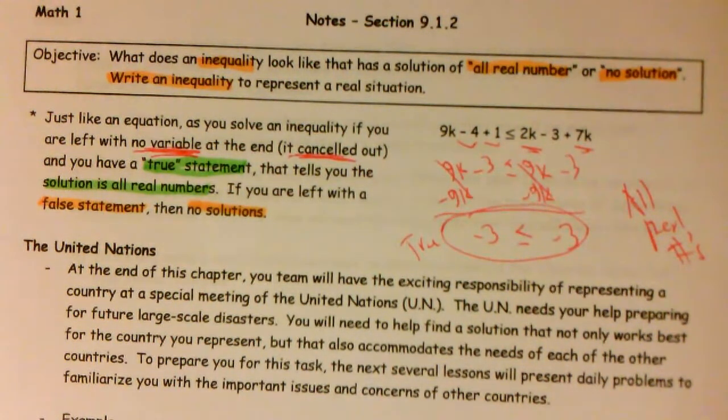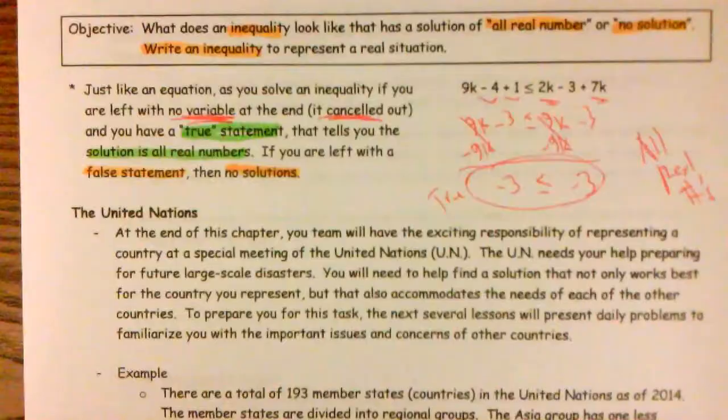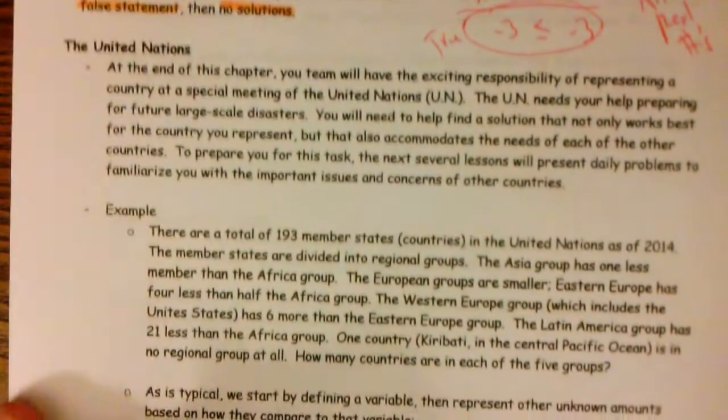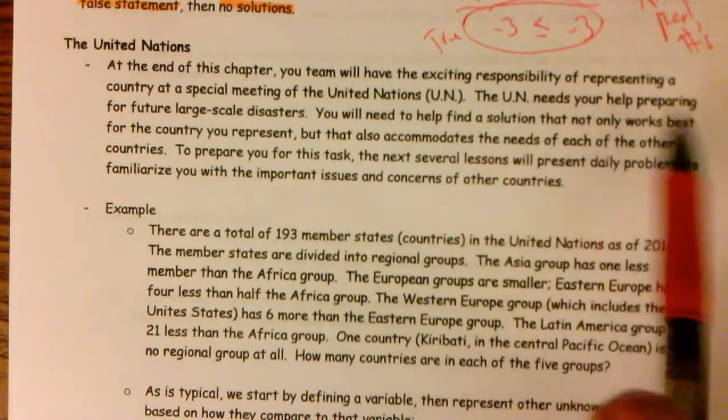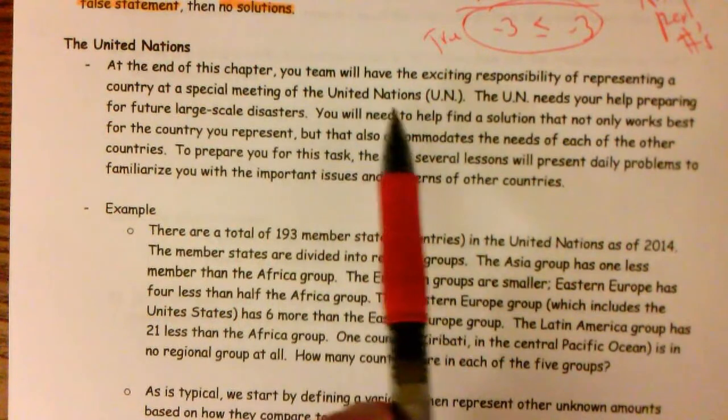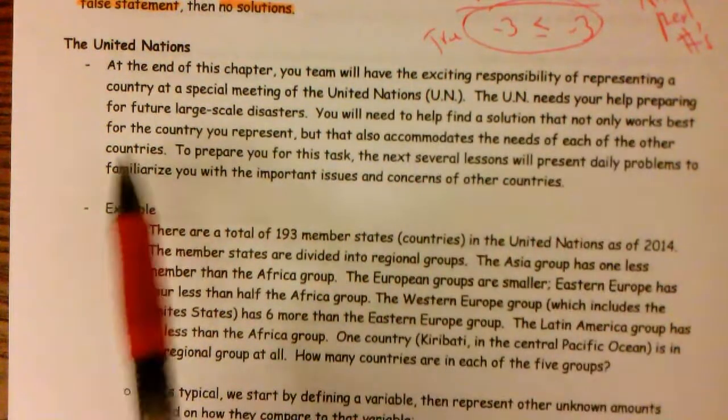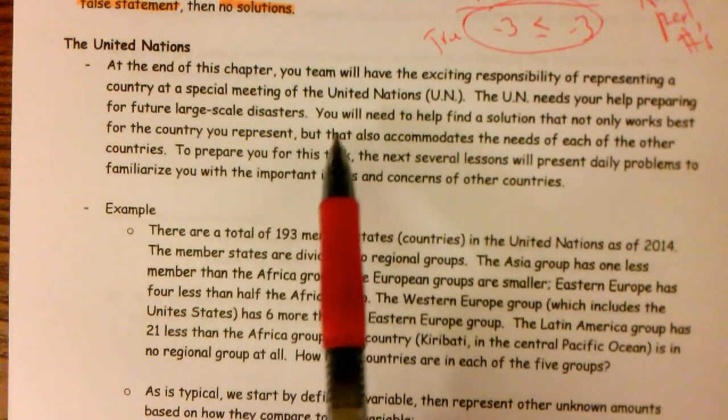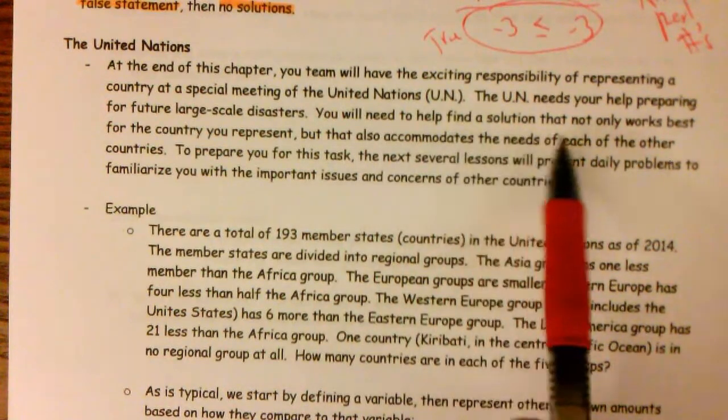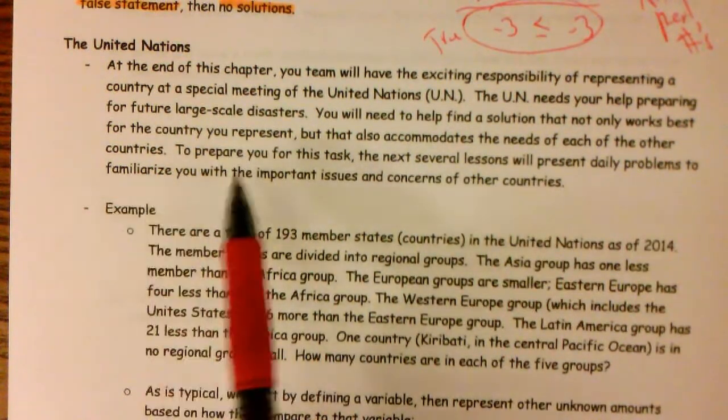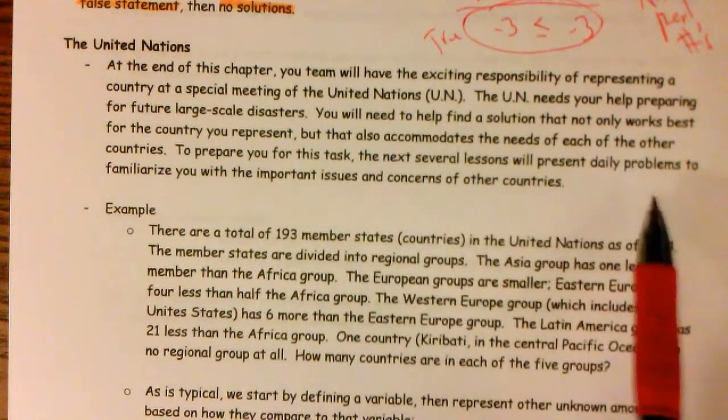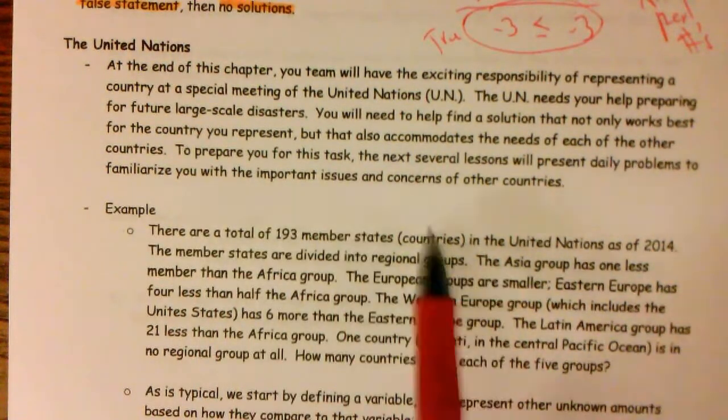All right. In addition to that, I have two story problems that we're going to write an inequality to represent a real situation. I will read this fairly quickly about the United Nations. At the end of this chapter, your team will have the exciting responsibility of representing a country at a special meeting of the United Nations. The UN needs your help preparing for future large-scale disasters. Interesting topic right now, huh? You will need to help find a solution that not only works best for the country you represent, but that also accommodates the needs of each of the other countries. To prepare you for this task, the next several lessons will present daily problems to familiarize you with the important issues and concerns of other countries.